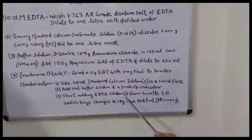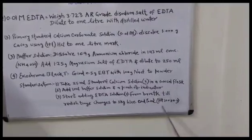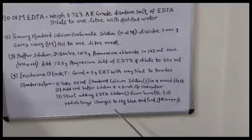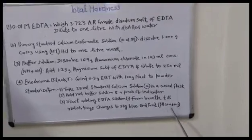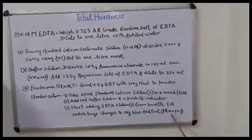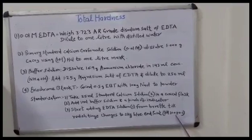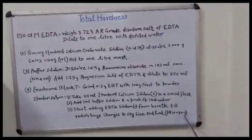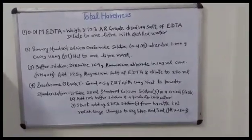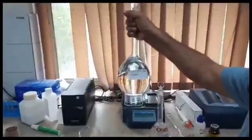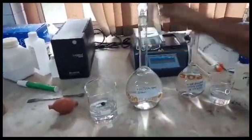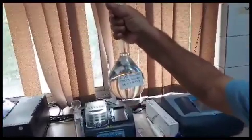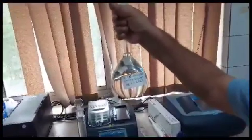Start adding EDTA solution from the burette until the red color of the solution changes to sky blue — that is the end point. The pH at the end point is 10 plus or minus 0.1. This is the approximately 0.01 M EDTA to be standardized, and this is the 0.01 M standard calcium solution.